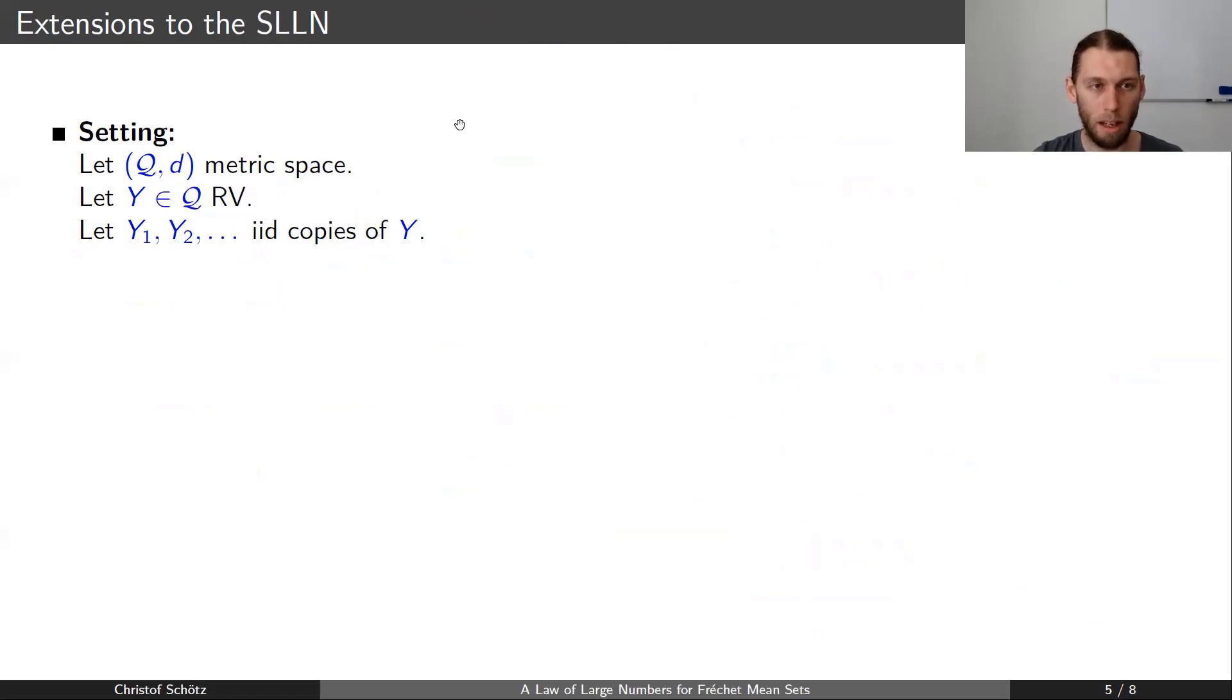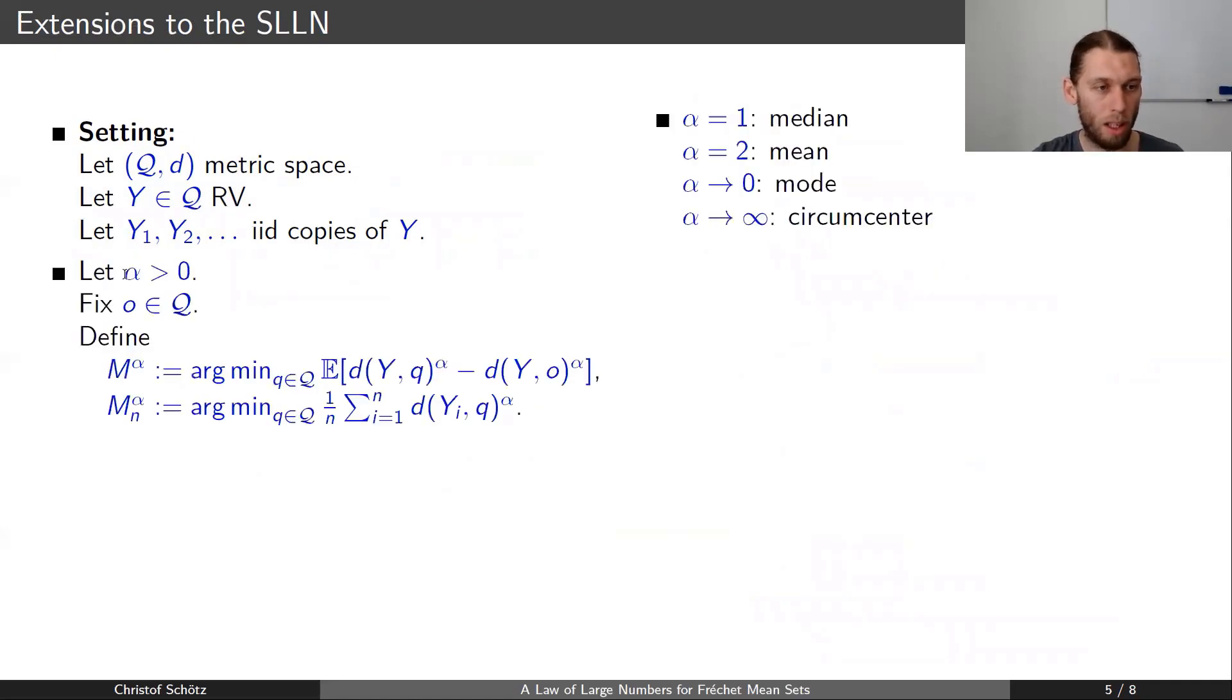Now we may consider some extensions to our result. Basically we are in the same setting. We have these iid copies of Y. Now we consider a real value alpha greater than 0. And now we define the alpha Fréchet mean as the minimizers of the expected distance to the random variable to the power of alpha instead of power 2. And similar for the sample Fréchet mean. For alpha equals 2, we are back at our previous definition.